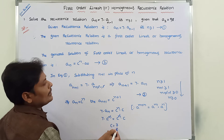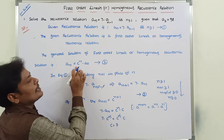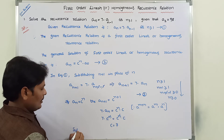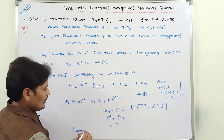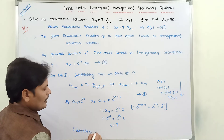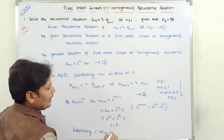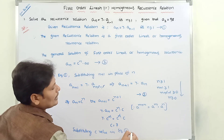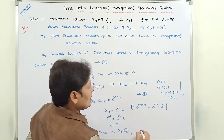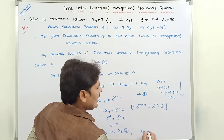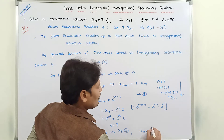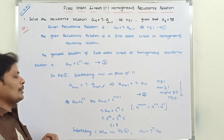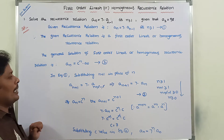Now substituting the c value of 7 into the general solution, equation 2. After substituting, we get: a_n = 7^n · a_0. This is equation 4.